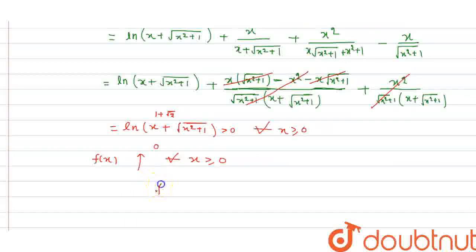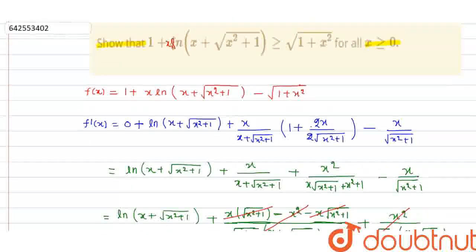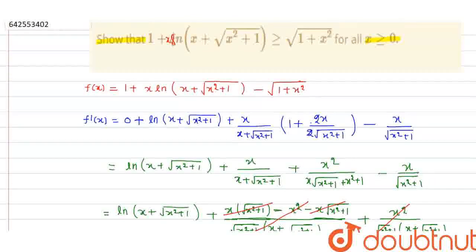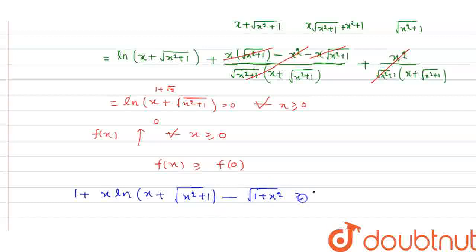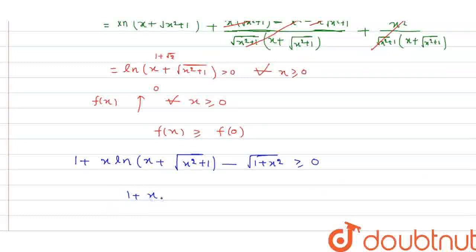That means f(x) is greater than or equal to f(0) for all x ≥ 0. Substituting x = 0: the term 0·ln(0 + √1) = 0, and √1 = 1, so f(0) = 1 + 0 − 1 = 0. Therefore 1 + x·ln(x + √(x²+1)) − √(1+x²) ≥ 0, which means 1 + x·ln(x + √(x²+1)) ≥ √(1+x²). This is what we needed to prove. Thank you.